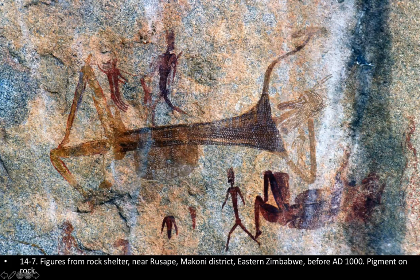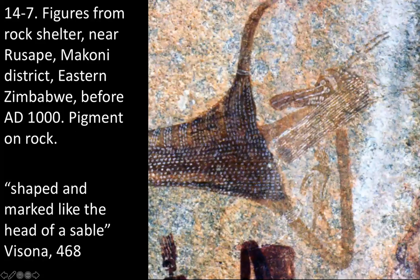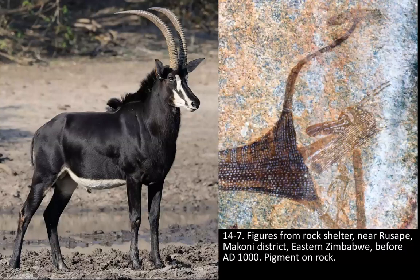When you get in close to this figure, you can see the head is very specific — it seems like a human figure shaped and marked like the head of a sable. Perhaps this was some kind of masquerade that the San people no longer do, or perhaps like modern San it's just an imagining of transforming into an animal. This is the sable — you can see the distinctive white stripes coming down from the eye going down to the snout, and also the horns.